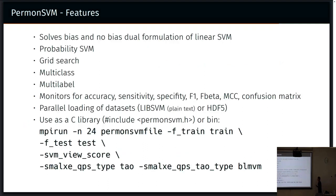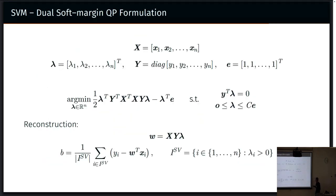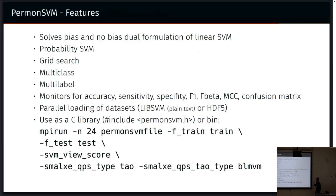PERMON SVM can solve this QP formulation. It can solve the bias formulation and the no-bias formulation. It has some other features as well. An interesting one is that it can monitor various metrics for support vector machines that tell you how good the model is.